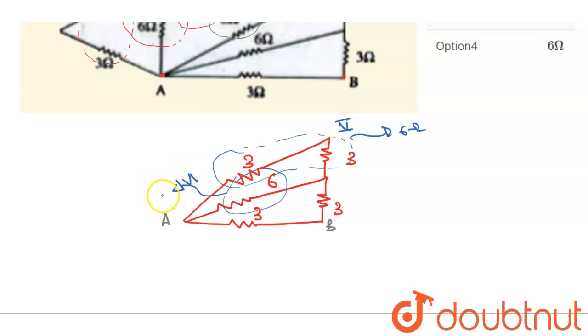Okay, so six and six will give us three ohms. Now our circuit will look somewhat like this. This is A. This is B.